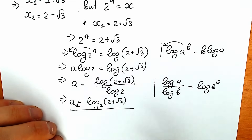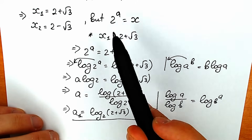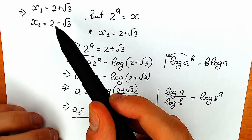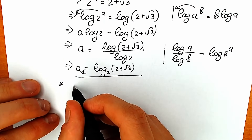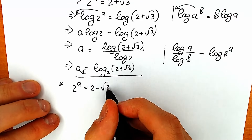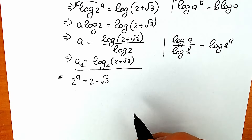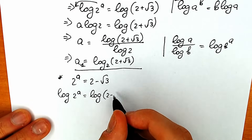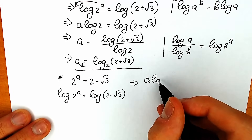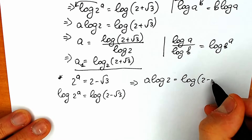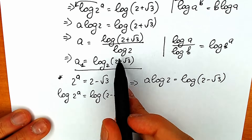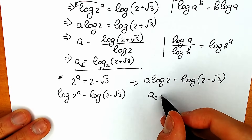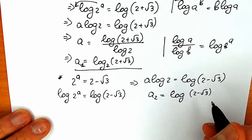For the second solution, x₂ = 2 - √3: we have 2^a = 2 - √3. Applying the same algorithm — log on both sides gives a·log(2) = log(2 - √3), and dividing by log(2) gives a₂ = log base 2 of (2 - √3).